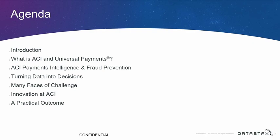What I'm going to talk to you about today is just a brief overview of what ACI is and universal payments. If you're in the financial industry, you probably already know about my company. If you're not, you probably never heard of us. I'm going to talk about what we're doing around payments intelligence and fraud detection, some of the challenges we have, and what we do around innovation to stay ahead of the fraudsters. Then I'll review the actual solution that we used — DataStax Cassandra — because that's probably why a lot of you are here.